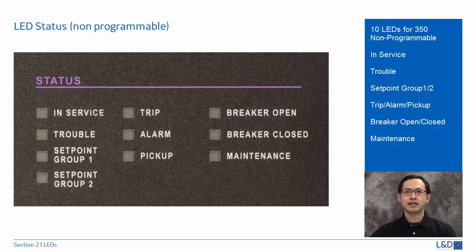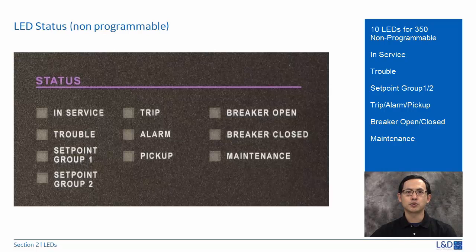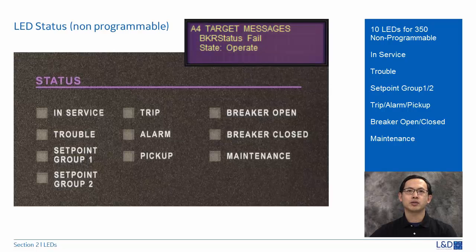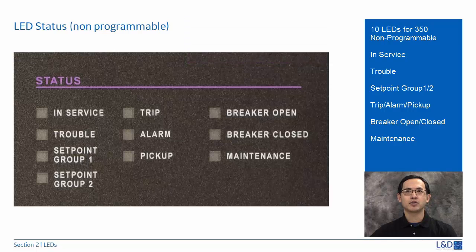Breaker status indication is based on the breaker's 52A and 52B contacts. With both contacts wired to the relay, closed breaker status is determined by closed 52A contact and opened 52B contact. Vice versa, open breaker status is determined by opened 52A and closed 52B contacts. If both 52A and 52B contacts are open or closed, the breaker is racked in the switchgear, both breaker open and closed LED indicators will be off. The relay will display a breaker status fail alarm message, and the alarm LED will also flash in orange color.